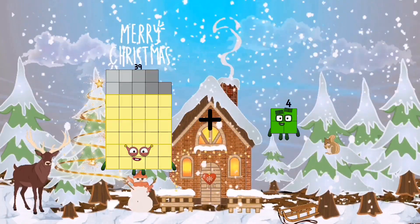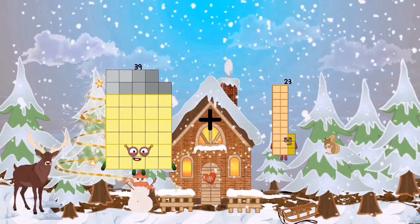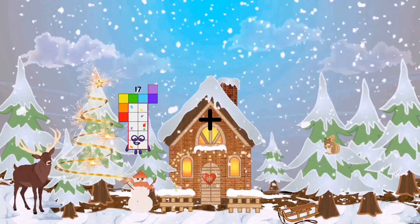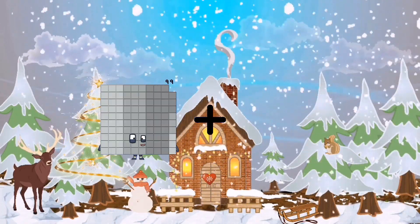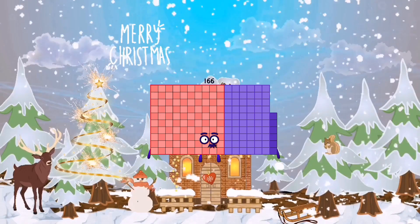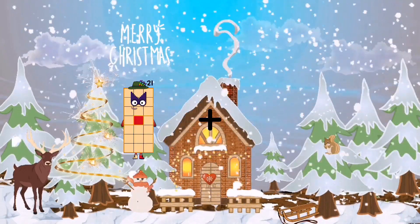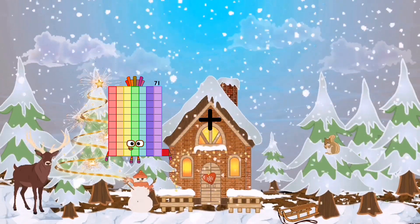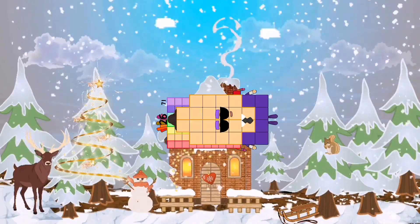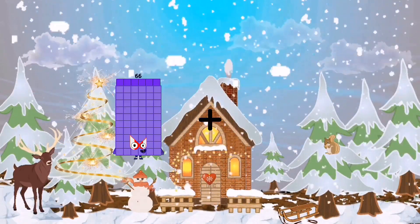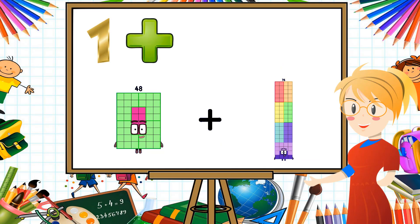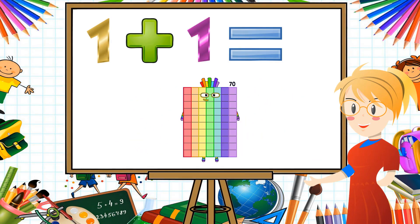39 plus 23 equals 62. 99 plus 67 equals 166. 71 plus 26 equals 97. 48 plus 22 equals 70.